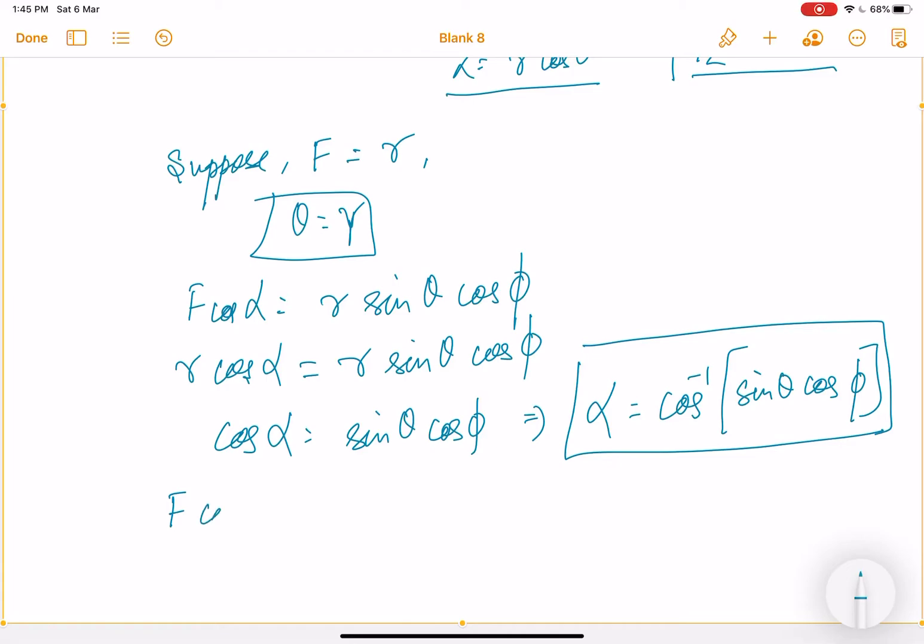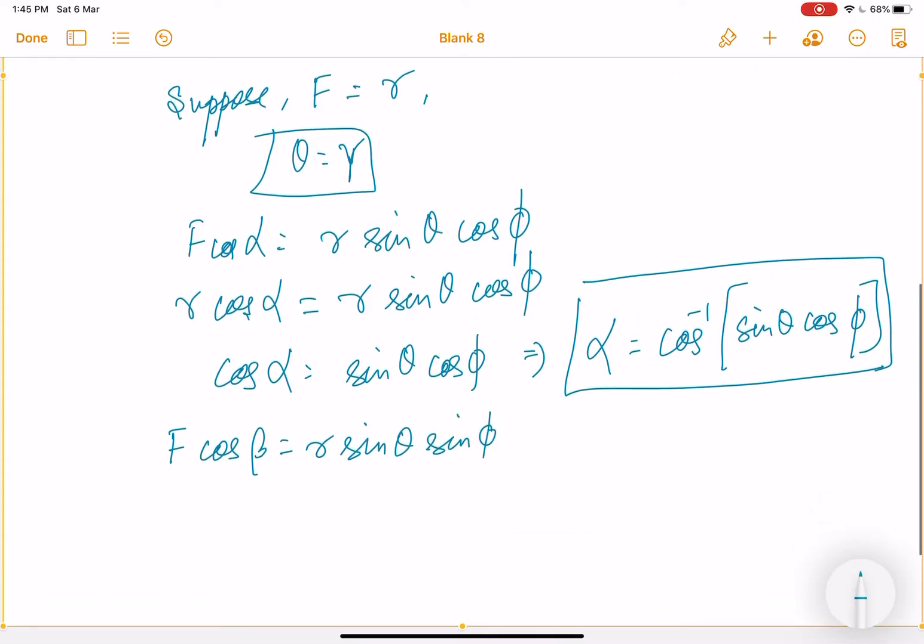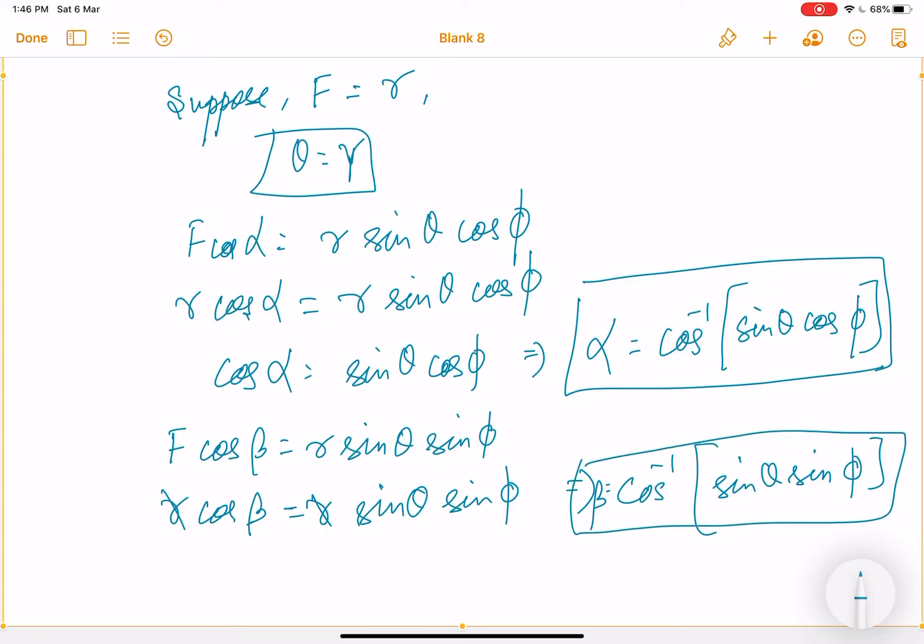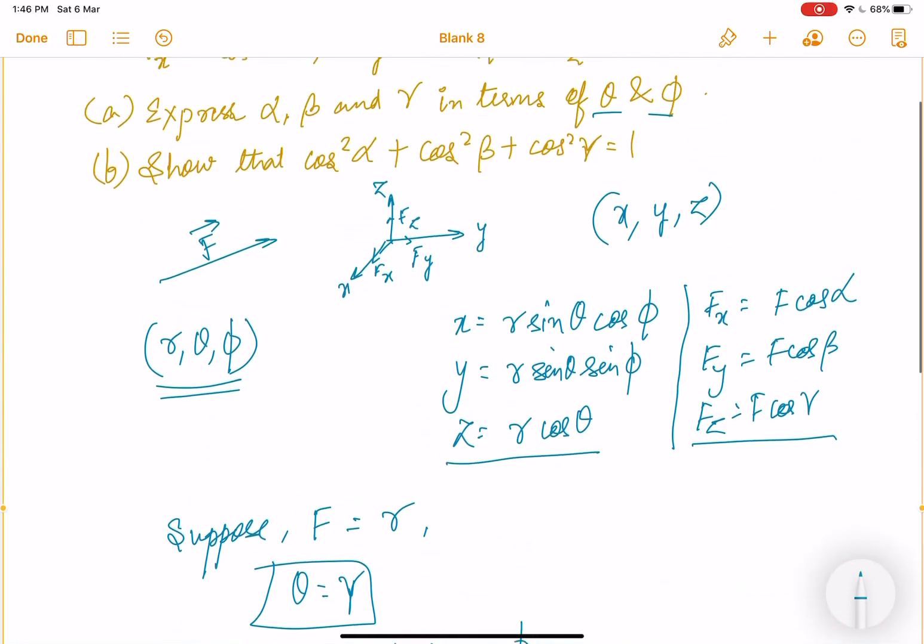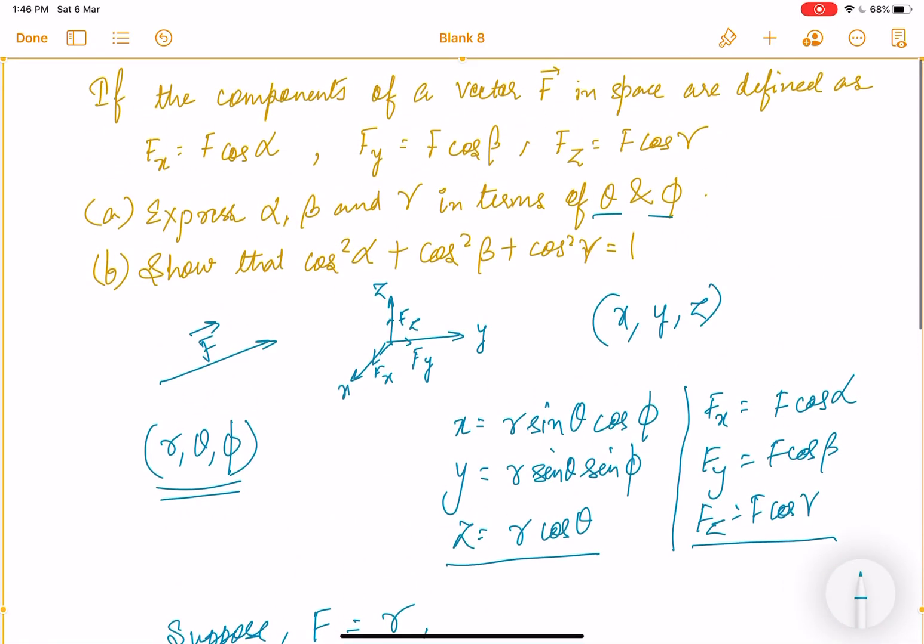Then, if I see the second equation, f cos beta will be equal to r sin theta sin phi. So instead of f, I will write r again by the same comparison method, r sin theta sin phi. Now, what is cos beta equal to? I mean beta is equal to cos inverse sin theta sin phi. This is clear. Then I got beta also in terms of theta and phi. See, here nothing is defined, so I use this comparison method to solve this.